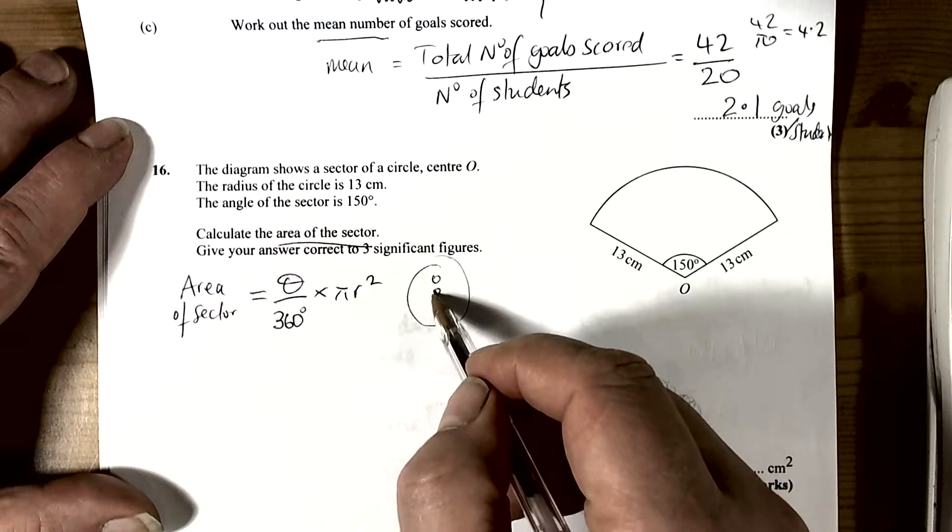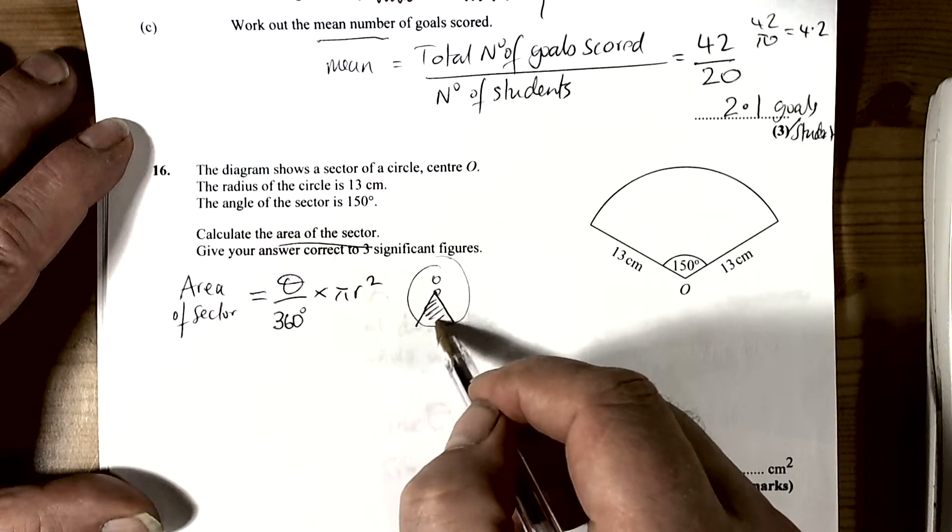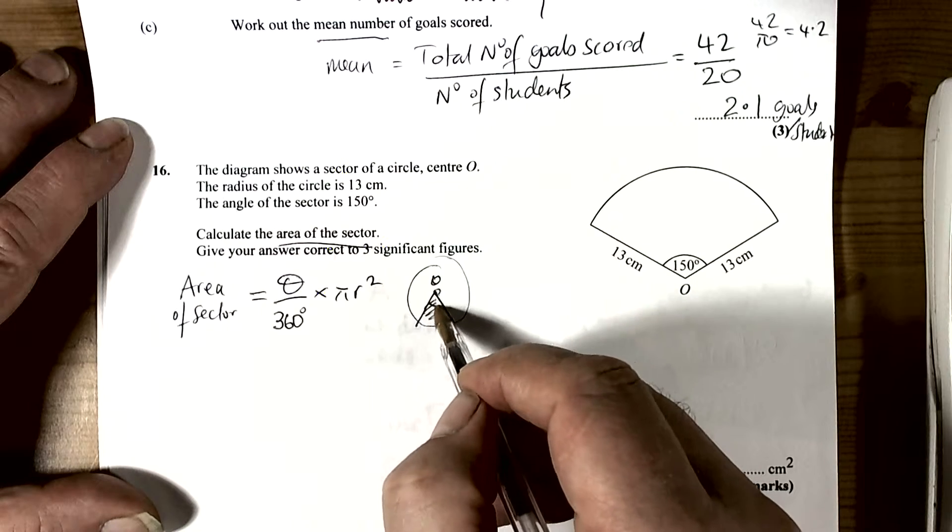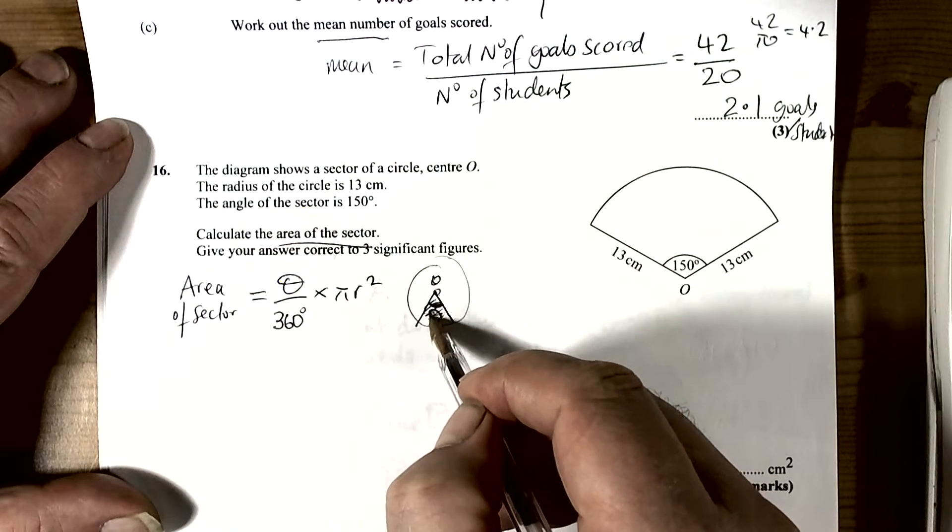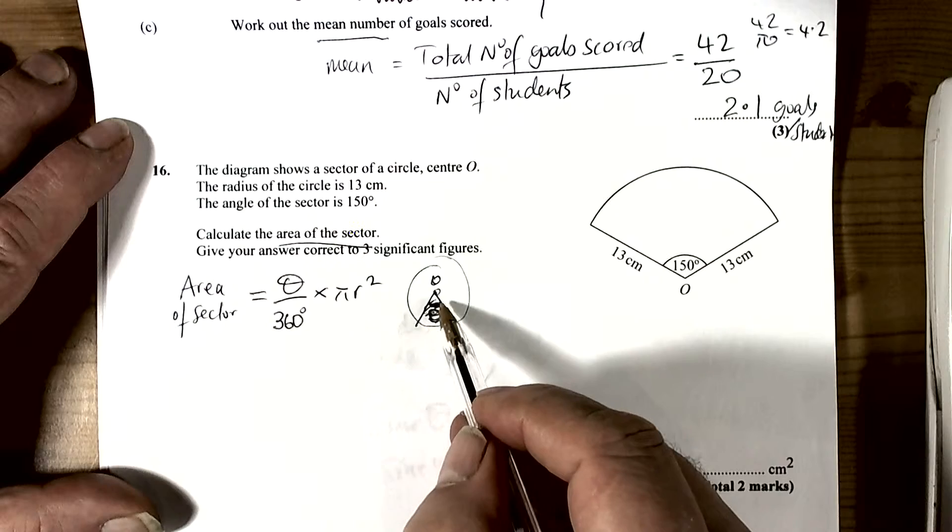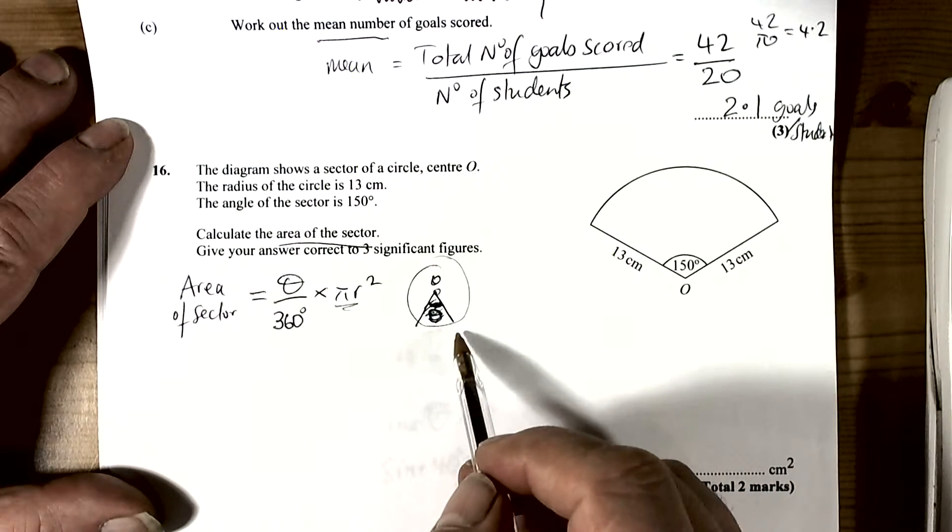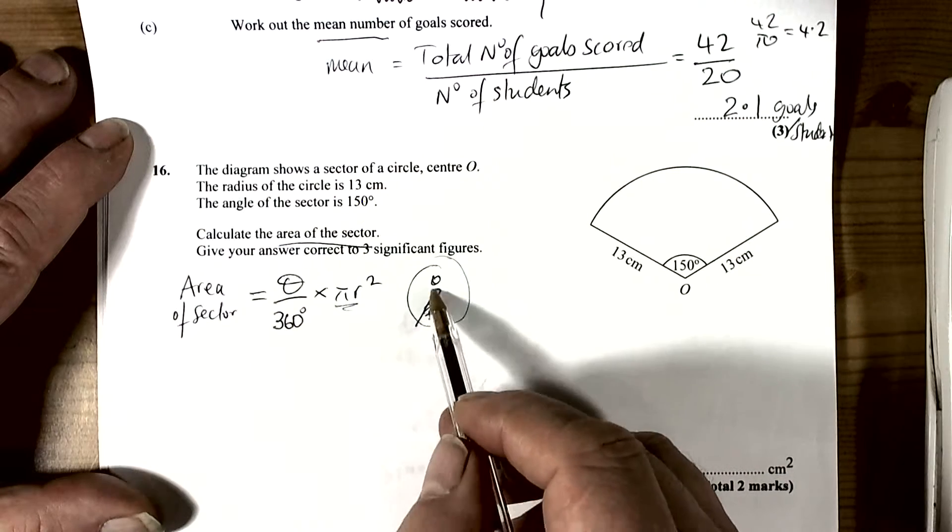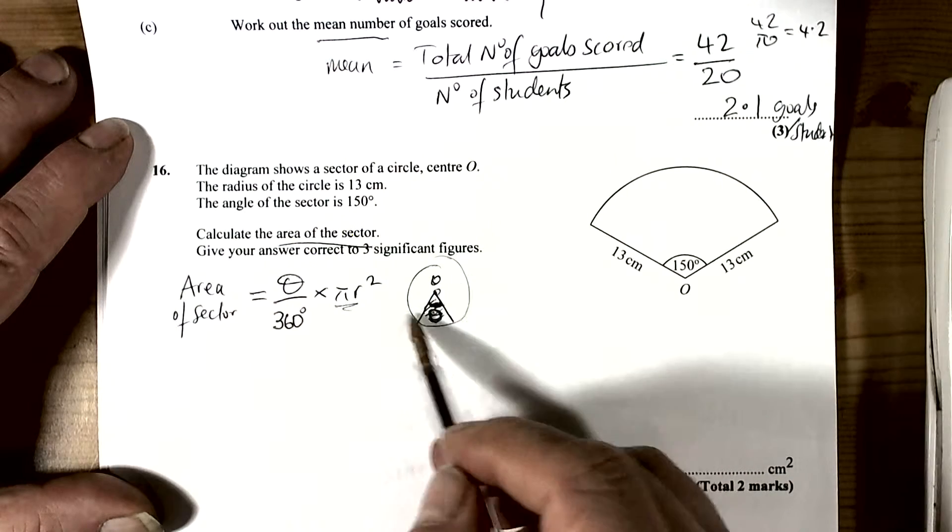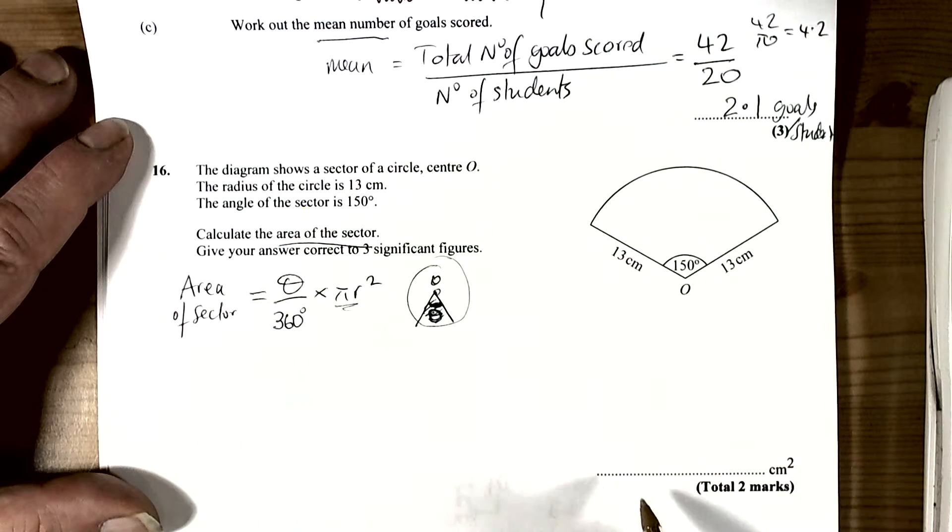Basically what it's related to is the fact that a sector is part of a circle. Pi r squared would be the whole circle, and theta over 360 is the fraction that the sector is taking up of that full circle, so it's a fraction that's been cut out.